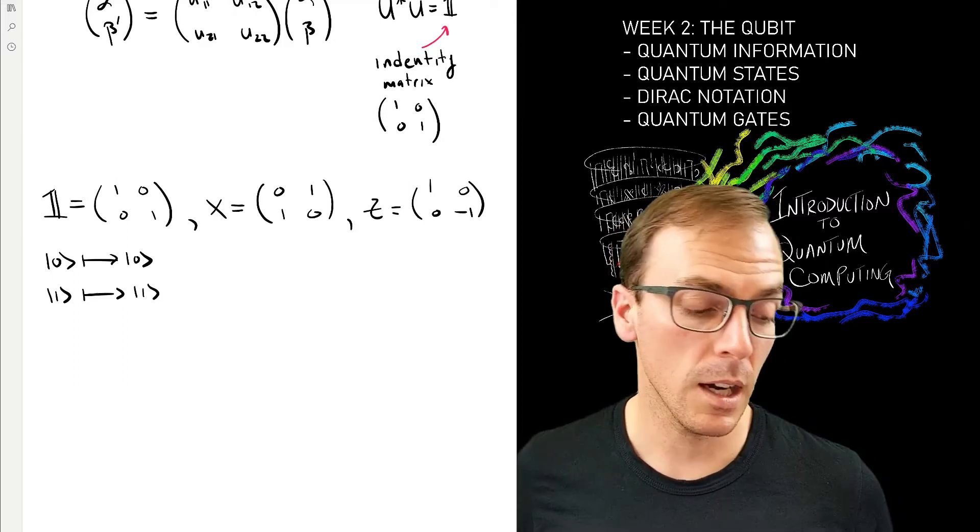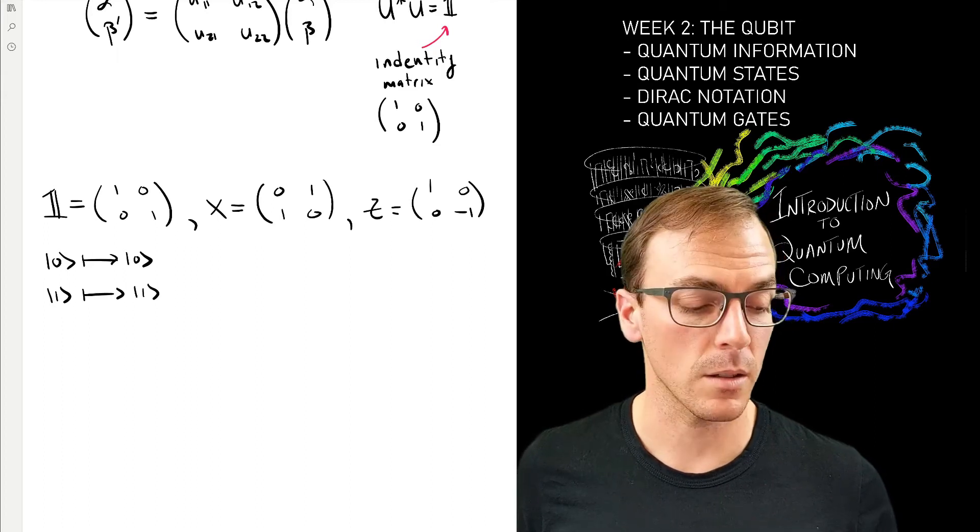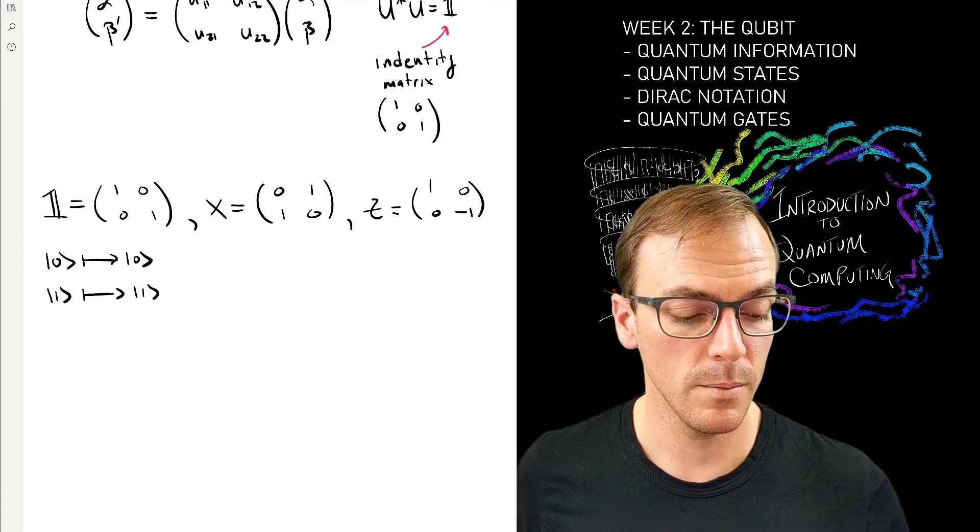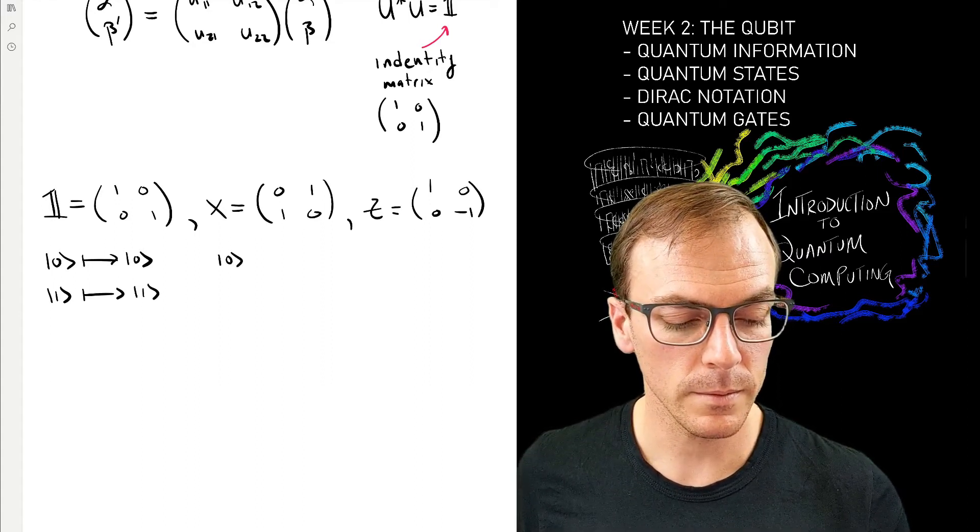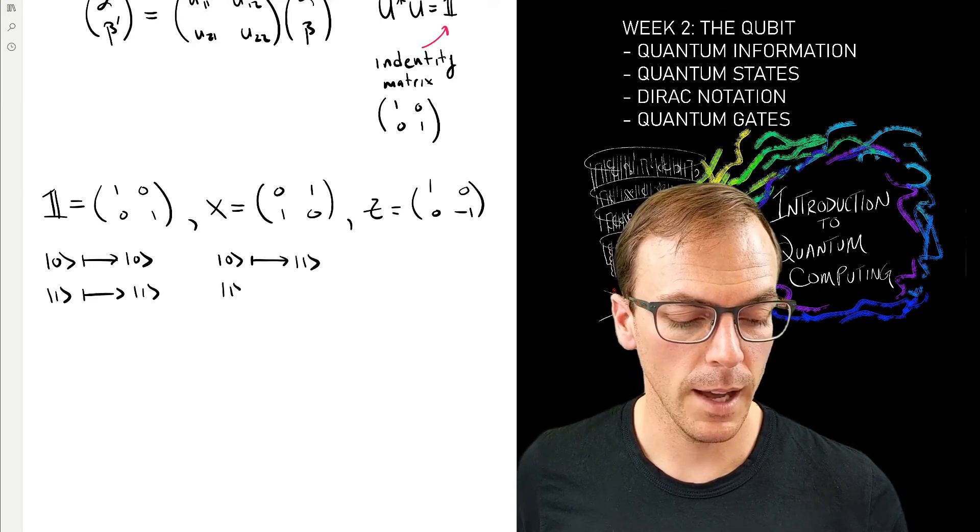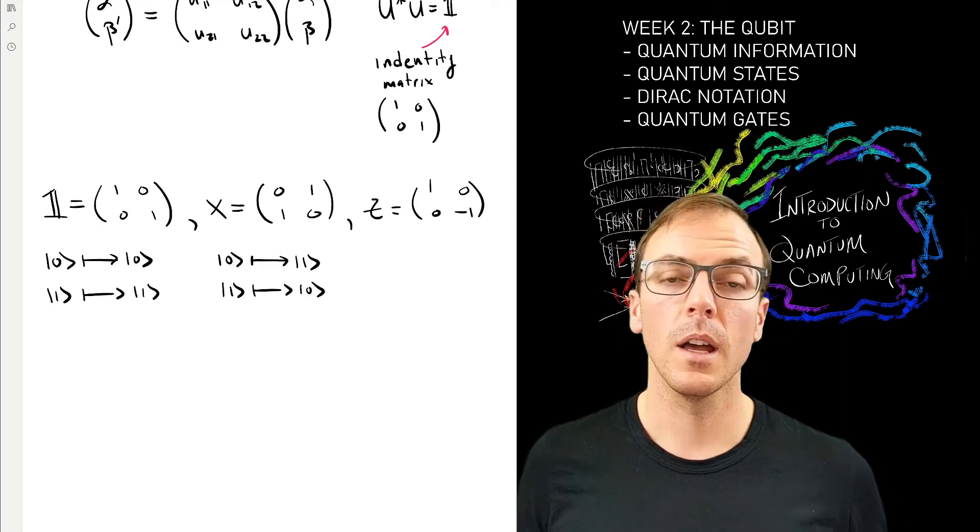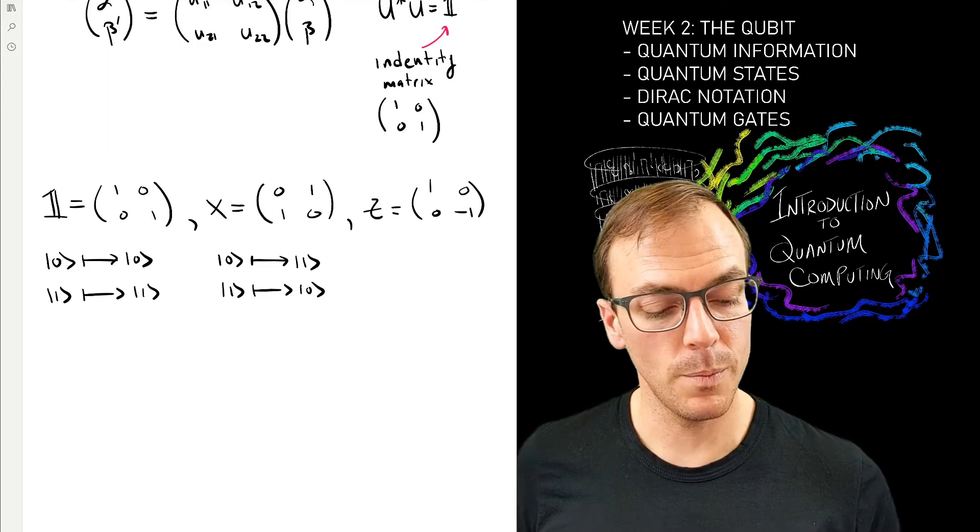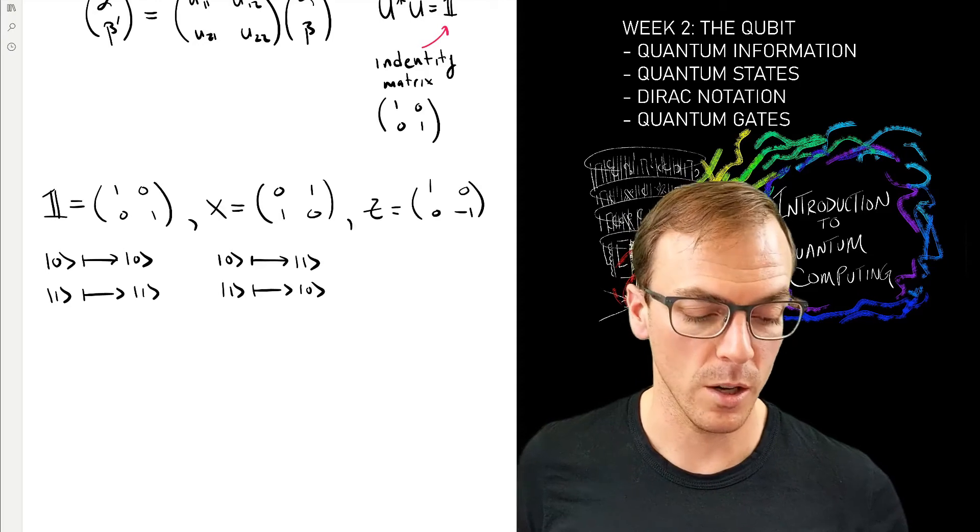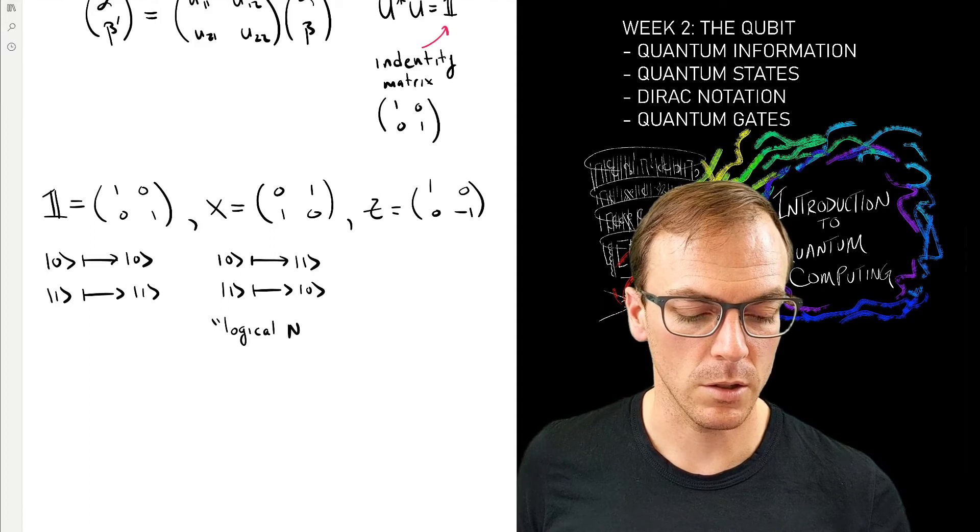The identity is the unitary or matrix that doesn't do anything, so the zero and one states remain the same. The X is the one that swaps zero for one, and when we think about these binary labels of these vectors, you can see that what it's done is a NOT operation. So this is actually a logical NOT.